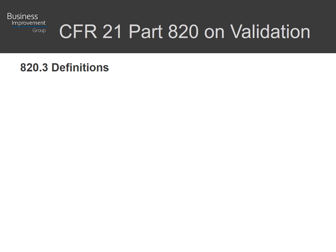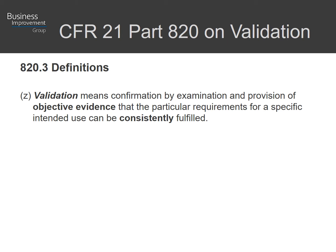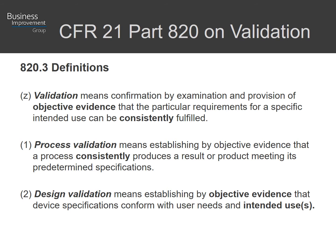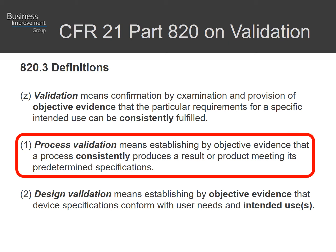Some definitions the FDA provides in this guidance document: validation is using objective evidence to demonstrate that requirements are fulfilled consistently. Process validation means establishing by objective evidence that a process consistently produces a result or product meeting predetermined specifications. Design validation uses objective evidence to show that specifications conform to the user's needs and intended use. For this project, we'll focus primarily on process validation and discuss how design of experiments can support that activity.